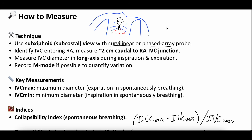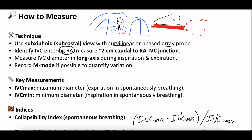Use the curvilinear or the phased array probe — the phased array also known as the cardiac probe. You're going to find the IVC as it's entering the right ventricle. You have your liver echo texture, then the IVC running beneath the liver, and then you can see it emptying into the heart. You want to measure it two centimeters caudal to the entrance into the right atrium. Measure the IVC long axis during inspiration and expiration. You can record it in M-mode to quantify the variation — M-mode gives you a tracing you can measure for a quantitative assessment. The key measurements are IVC max and IVC min during the expiratory and inspiratory cycle, which drive both size and collapsibility or distensibility.